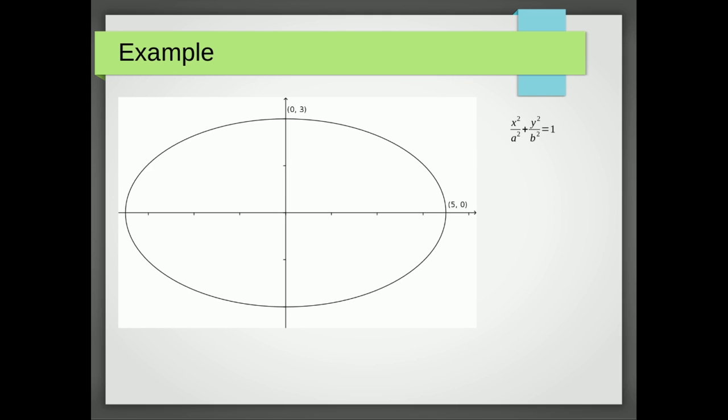where a is where it cuts the x-axis, so a is 5, and b is where it cuts the y-axis, so b is 3. So 5 squared is 25 and b squared is 9, so we end up with the equation x squared over 25 plus y squared over 9 equals 1.